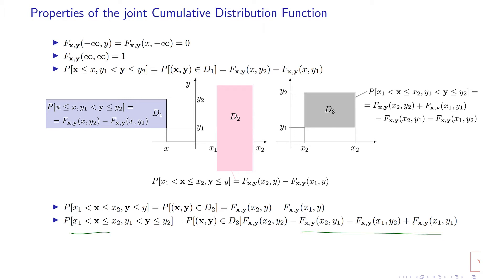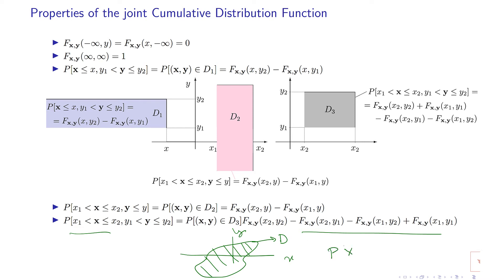These are the important properties of the joint cumulative distribution function, which allow me to calculate the probability of the random pair (x, y) being in any arbitrary area. So suppose this shaded area is any region D(x, y) — any other region. I want to calculate the probability of the random pair (x, y) being in this arbitrary D, and express it in terms of the joint CDF.